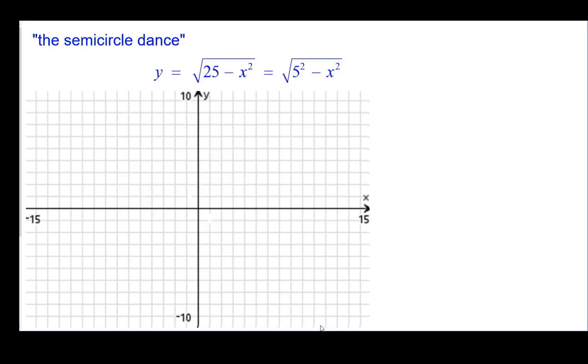So the semicircle dance, you really only need 3 points to make a semicircle. So go ahead and plot those now. Okay, so 5, 0, 0, 5, and negative 5, 0. Those are the easy points to plot. The radius is 5.